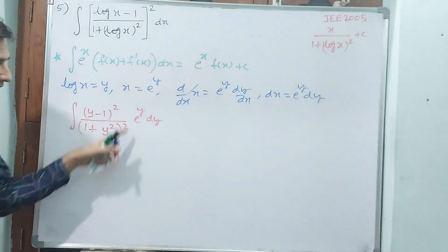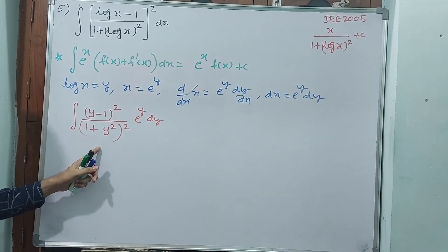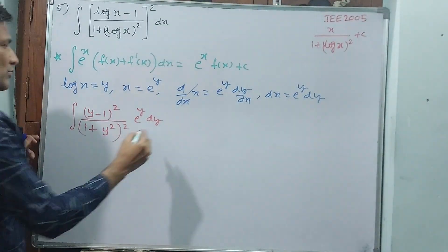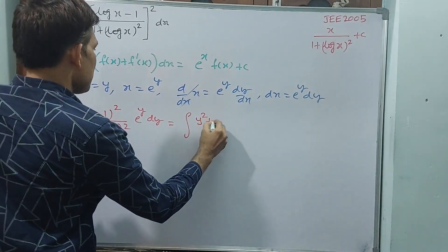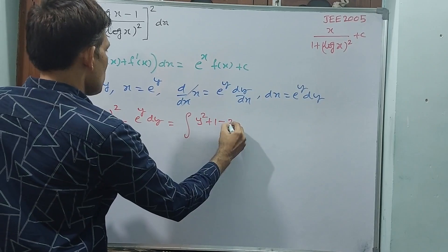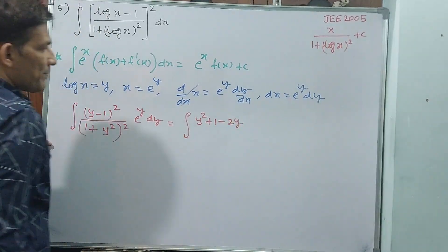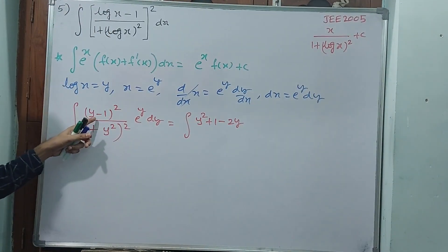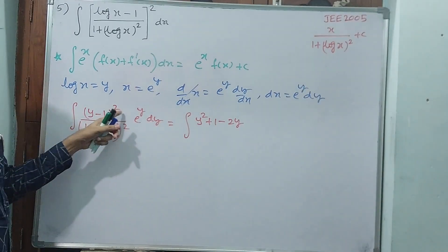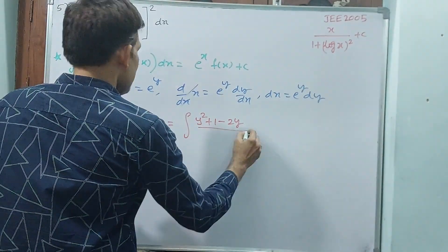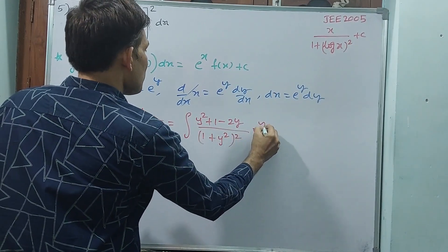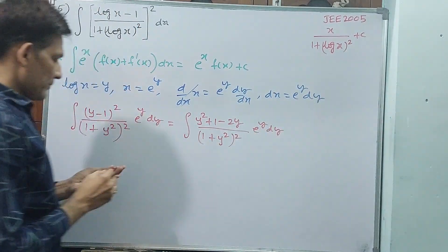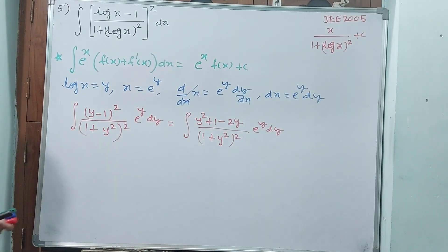Now, entire things are in the form of y. You expand the numerator. Integral a square plus b square minus 2ab. Divide it by 1 plus y square, whole square into e power y dy. Separate it, easy.